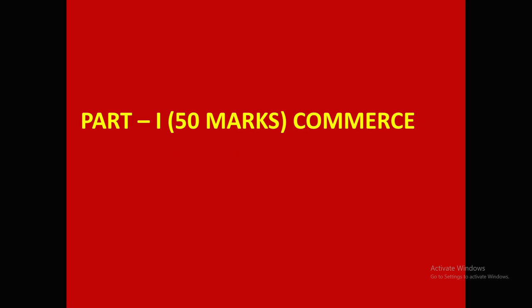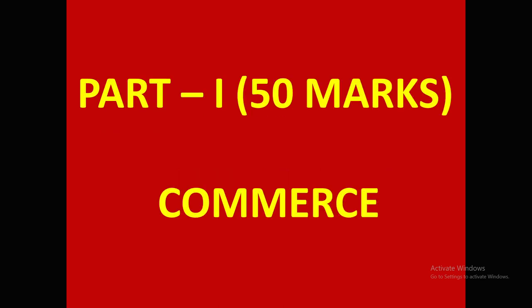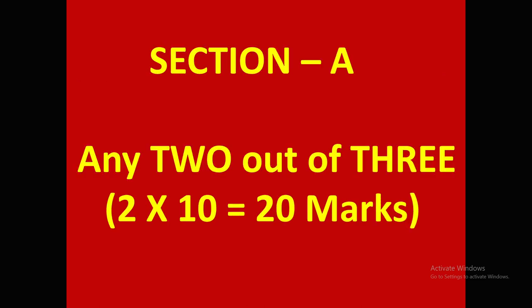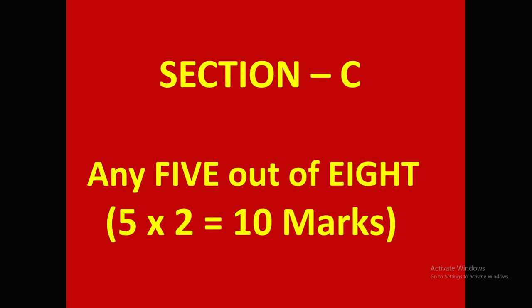The paper is divided into two parts: Part 1 and Part 2. Part 1 is for 50 marks, Part 2 is also for 50 marks. Part 1 is Commerce for 50 marks. In Section A, three questions will be given; you have to attempt any two. Each question is for 10 marks — 2 into 10 = 20 marks. In Section B, 6 questions will be given; you have to attempt any 4. Each one is for 5 marks — 4 into 5 = 20 marks. In Section C, 8 questions will be given; you have to attempt any 5. Each one is for 2 marks — 5 into 2 = 10 marks.